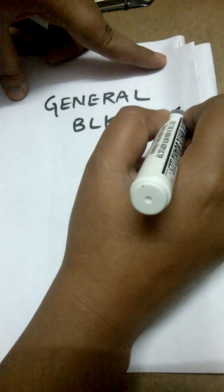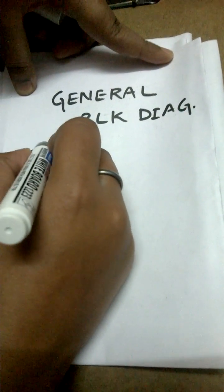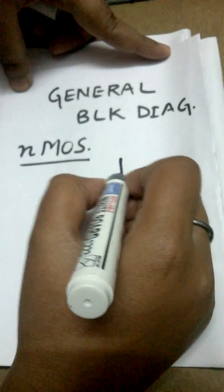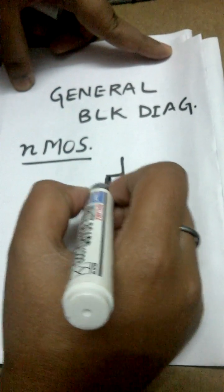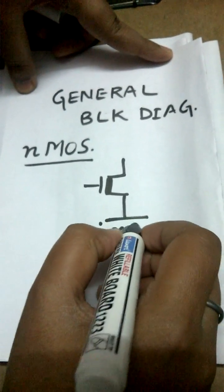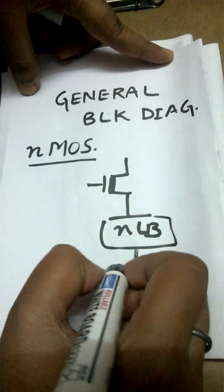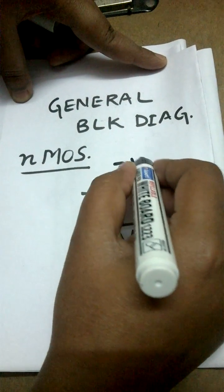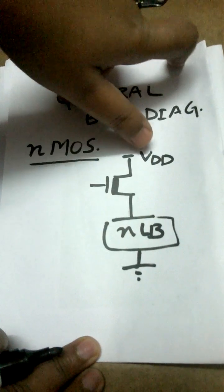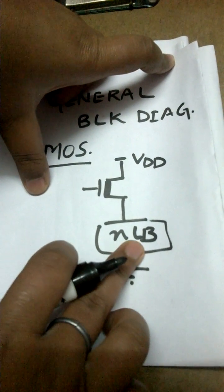For any structure, any digital system that is to be realized—suppose I want to realize the system using NMOS only, NMOS devices—the general structure is going to be in this manner. Here VDD is representing the positive part of the power supply, this is ground, NLB is the N logic block.